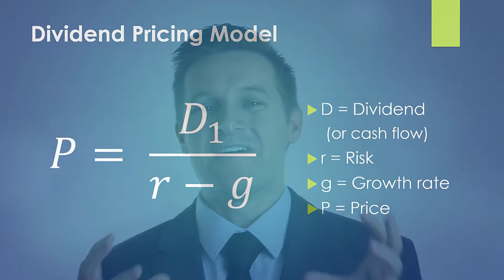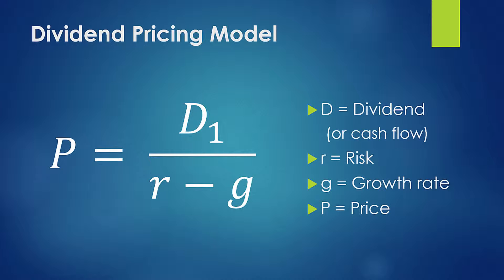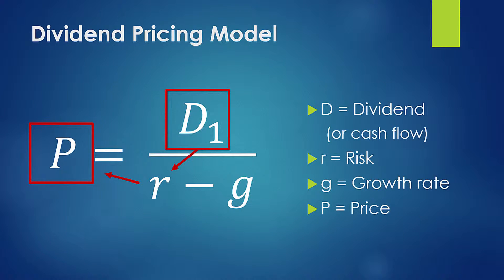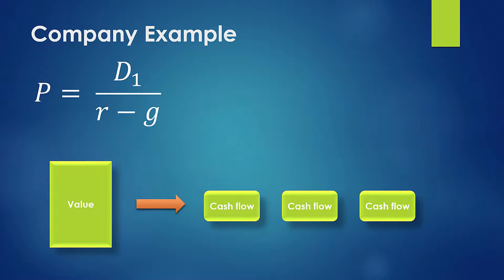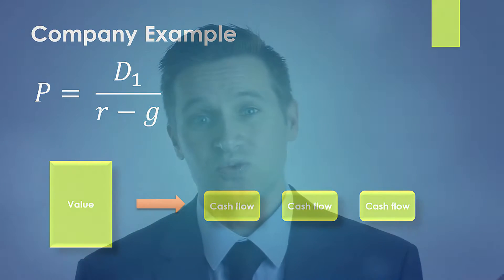The concept is that the value of a potential investment is a function of the expected cash flows you're going to receive, discounted by risk. So if you're an organization or a company and you expect to generate a certain level of cash flow each year out into the future, those cash flows are discounted by the perceived risk of your organization, and that determines the price someone's willing to pay.